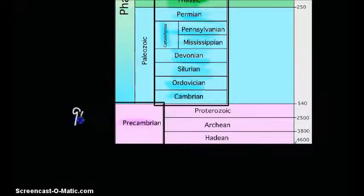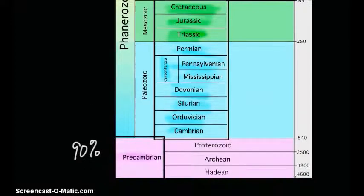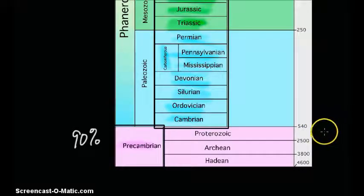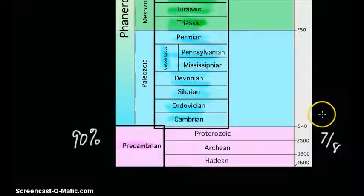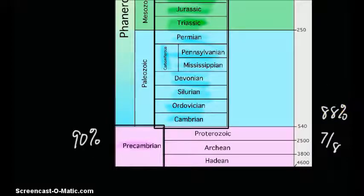The Precambrian takes up 90% of the geologic timescale — not 90% of this picture, but 90% of actual time. Other sources say it's seven-eighths of the timescale, which is about 88%. The exact split isn't critically important, but it takes up a huge section of time.